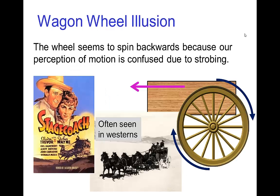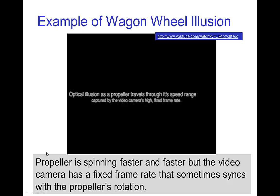A similar effect occurs with the wagon wheel illusion. In the wagon wheel illusion, we see a wheel on a car and the spinning of the wheel appears to be backwards from what we know must be the actual direction of spinning given the direction of motion. This is again a disruption of the perception of motion, but in this case the motion appears to be backwards from what we know must be the true motion.